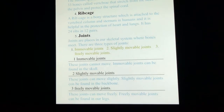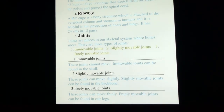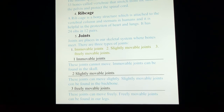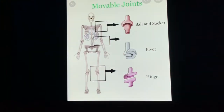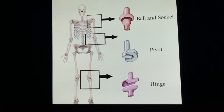Let's move to the second and third types: slightly movable and freely movable joints. Slightly movable joints can move only slightly — they cannot move freely. Slightly movable joints can be found in the backbone. Freely movable joints, on the other hand, can move freely. Let me show you the picture of it.